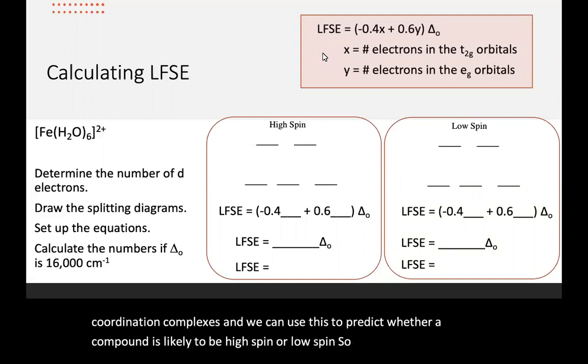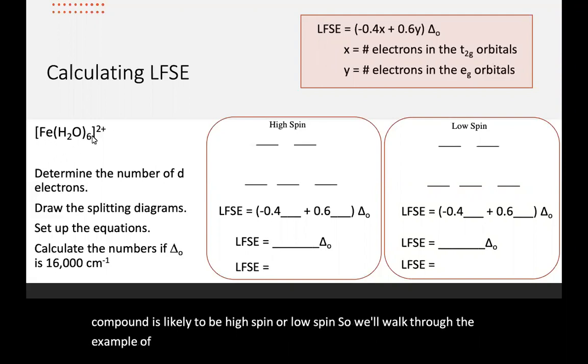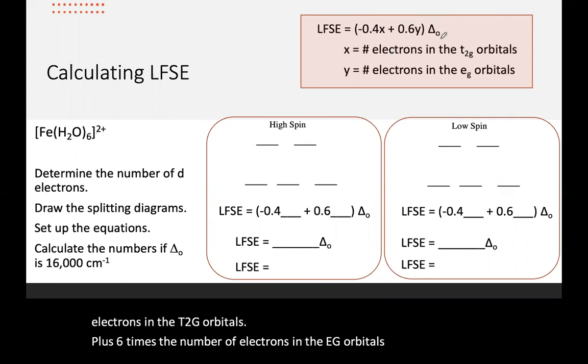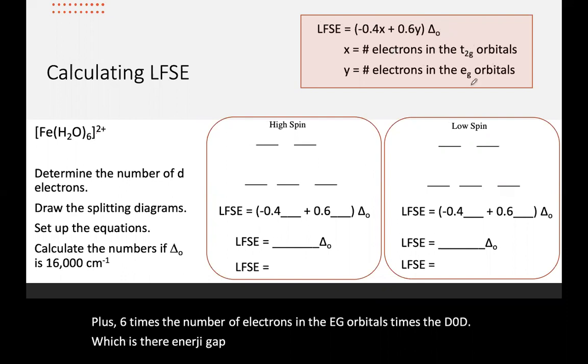We'll walk through the example of the iron complex with six water ligands. Our calculation for LFSE is that it's negative 0.4 times the number of electrons in the t2g orbitals plus 0.6 times the number of electrons in the eg orbitals times delta O, which is the energy gap between the t2g and the eg.